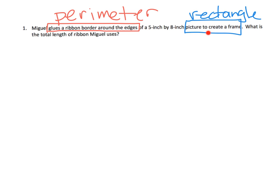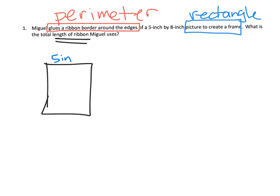A lot of words go together to mean rectangle, and a lot of words go together to mean perimeter. Then it asks: what is the total length of the ribbon? That's the perimeter. So let's draw a picture — there's our rectangle, 5 inches by 8 inches, and our job is to find the perimeter of this figure.